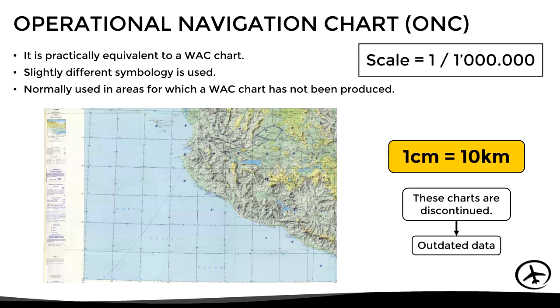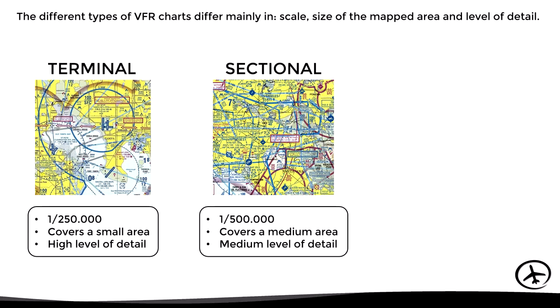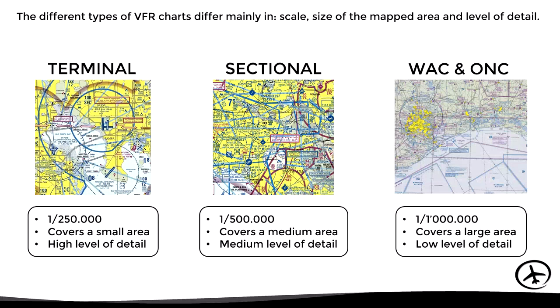Now, in summary, the different types of VFR charts differ mainly in scale, size of the mapped area, and level of detail. Here we can highlight the terminal area chart with a scale of 1 in 250,000, which covers a relatively small area with a high level of detail. There is also the sectional chart with a scale of 1 in 500,000, which covers a medium-sized area with a medium level of detail. And finally, there is the world aeronautical chart and the operational navigation chart with a scale of 1 in 1 million, which covers a large area with a low level of detail. Now, the chart to be used for flight planning will depend on how long the route is and the availability of these charts.